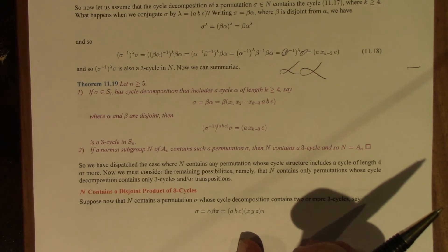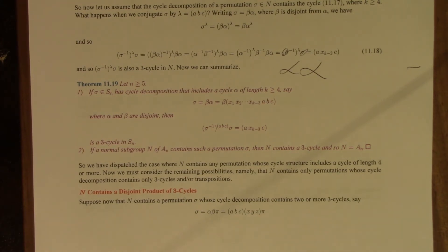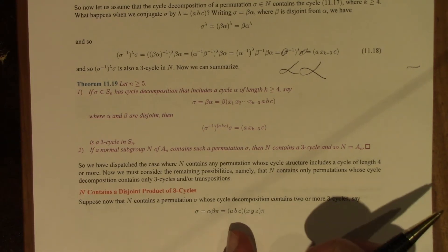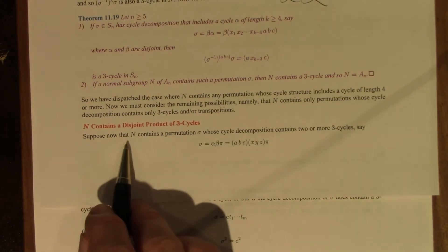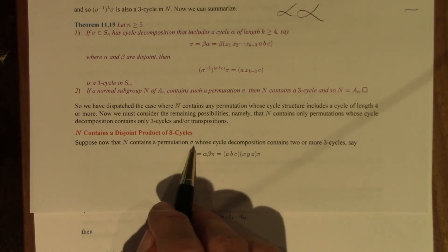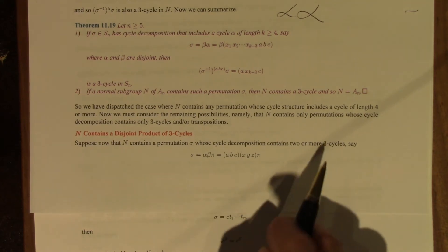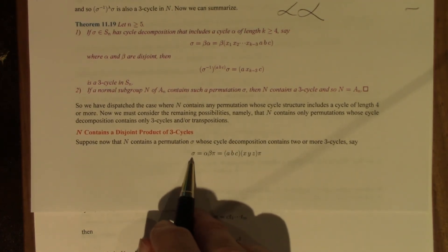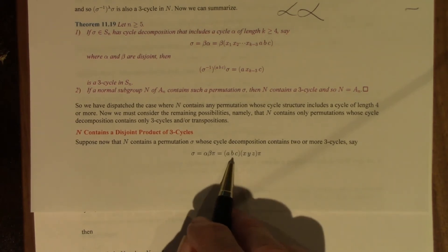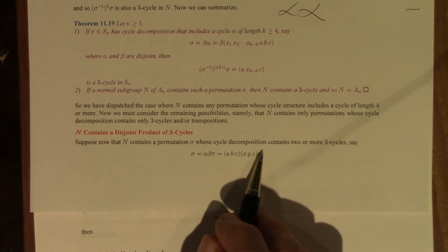Now we have to consider the remaining possibilities, which are that N contains only permutations whose cycle decomposition contains only 3-cycles and/or transpositions (1-cycles won't interfere). The first possibility: suppose N contains a permutation sigma whose cycle decomposition contains two or more 3-cycles. We can write sigma as alpha times beta times pi, where alpha is a 3-cycle, beta is a 3-cycle, pi is the rest of the cycle decomposition, and all three are pairwise disjoint.